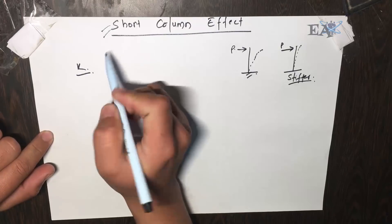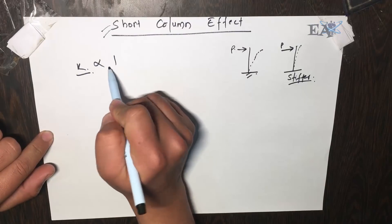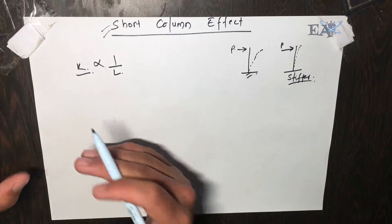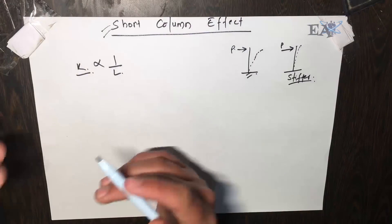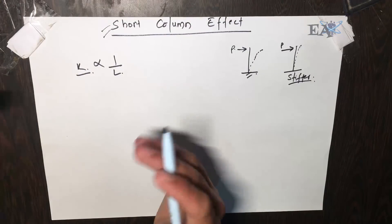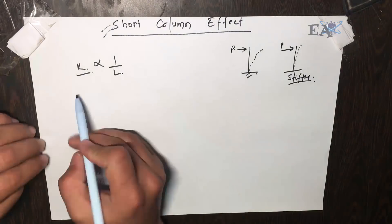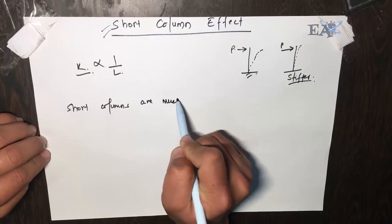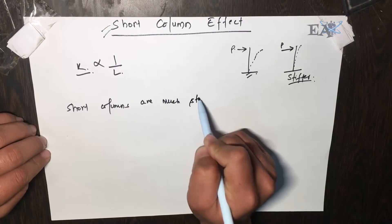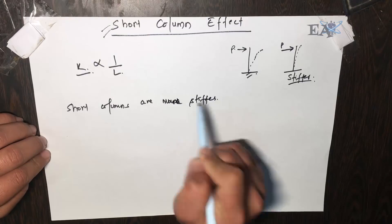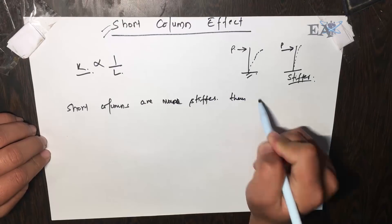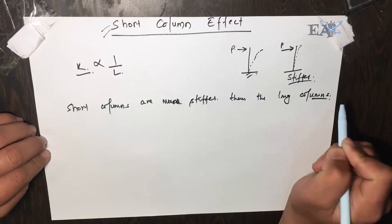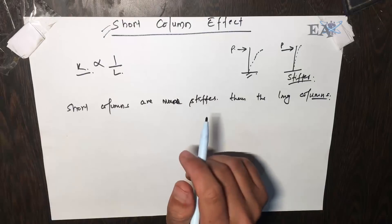We denote the stiffness of any column by K, and we know that K is inversely proportional to the length of the column. As length increases, stiffness decreases, and as length decreases, stiffness increases. So in this situation, short columns are much stiffer than long columns, meaning they are harder to bend.